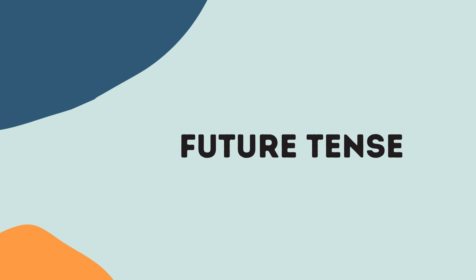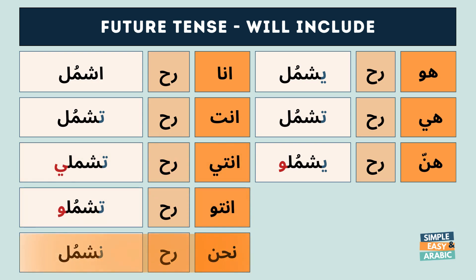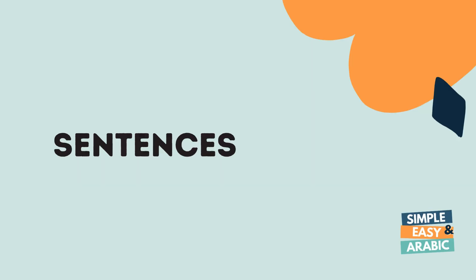Ready for the future? Let's conjugate the future tense: أنا رح إشمل، أنت رح تشمل، أنت رح تشملي، أنتو رح تشملو، نحن رح نشمل، هو رح يشمل، هي رح تشمل، هنن رح يشملو.